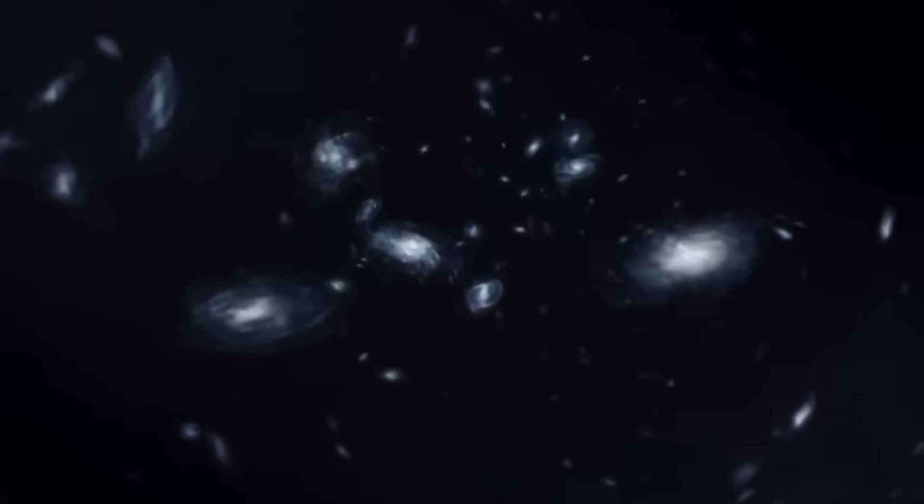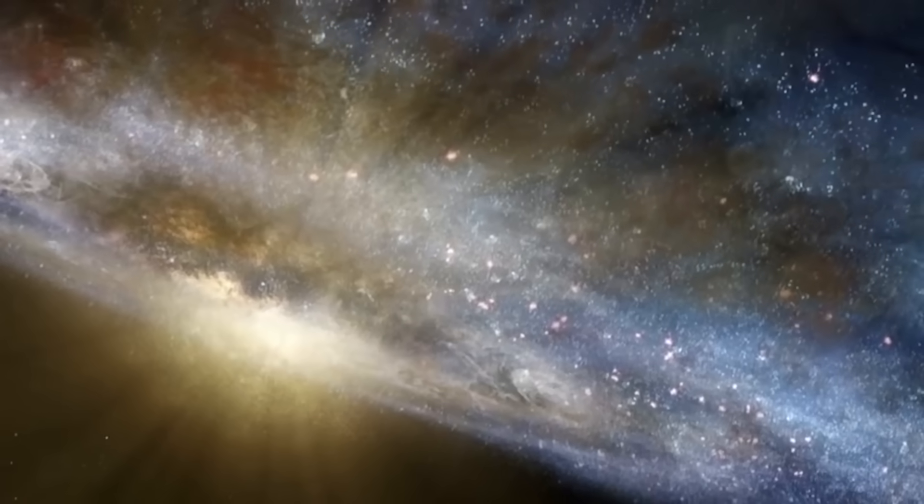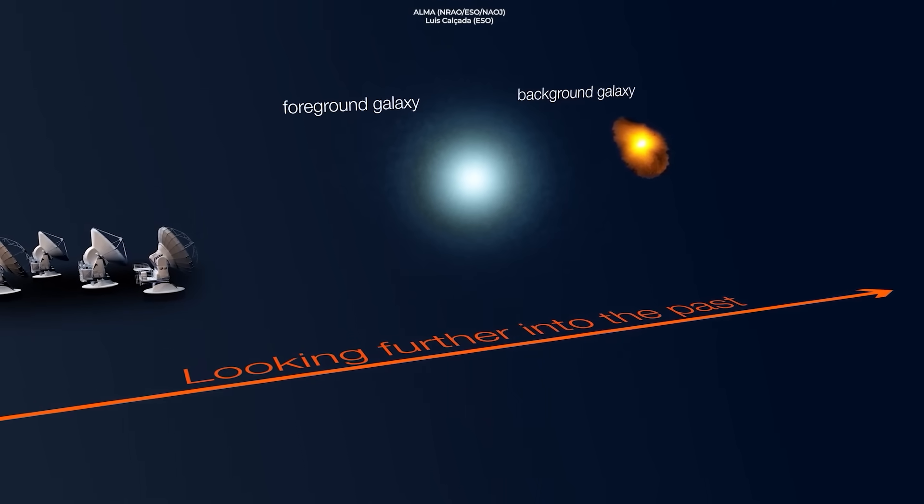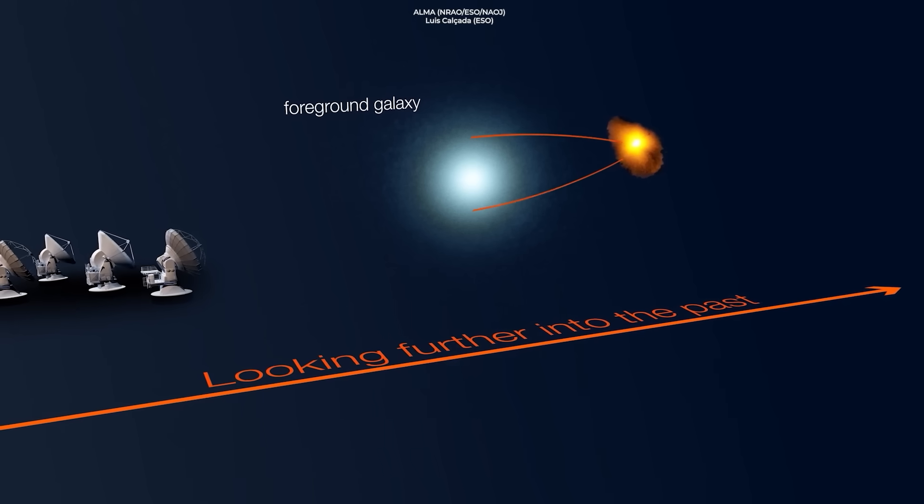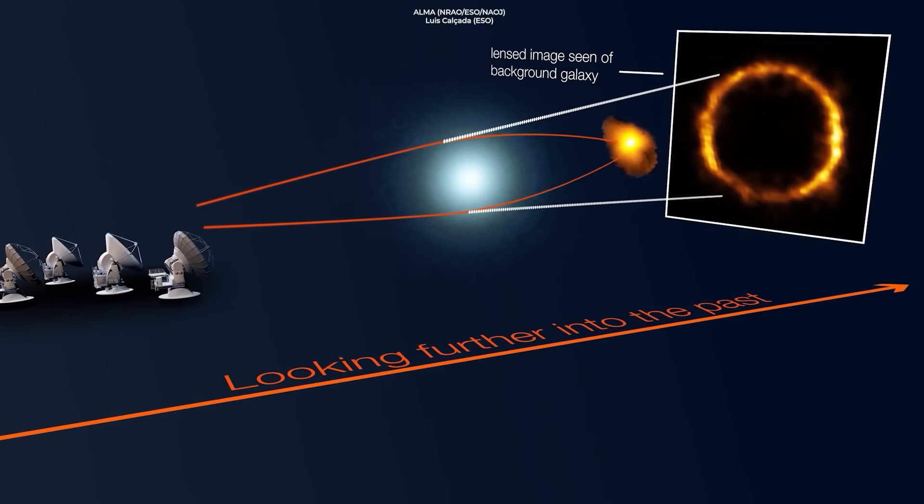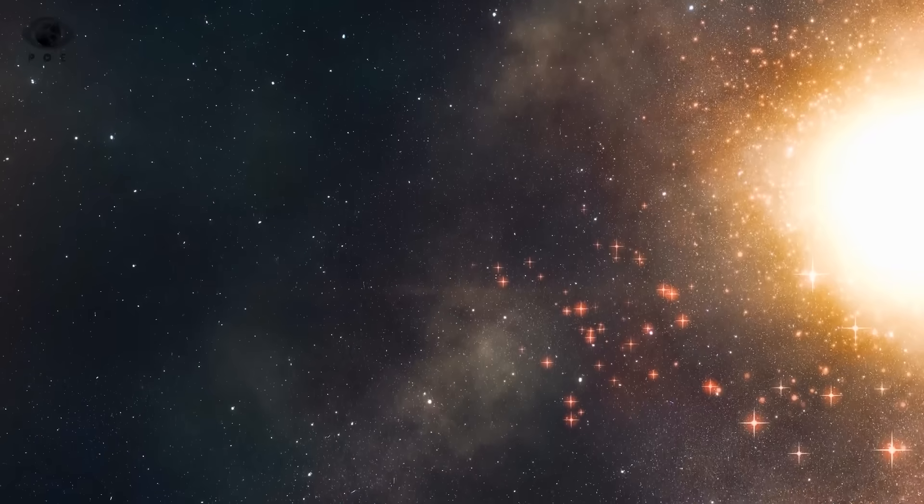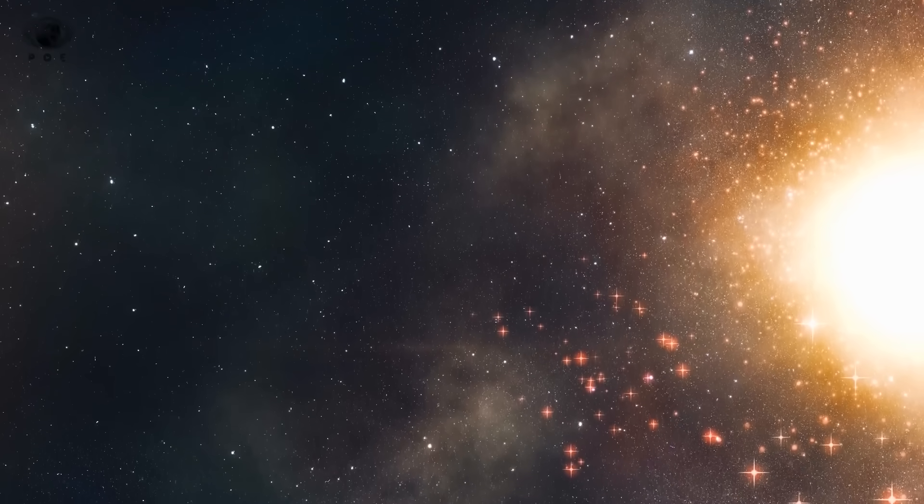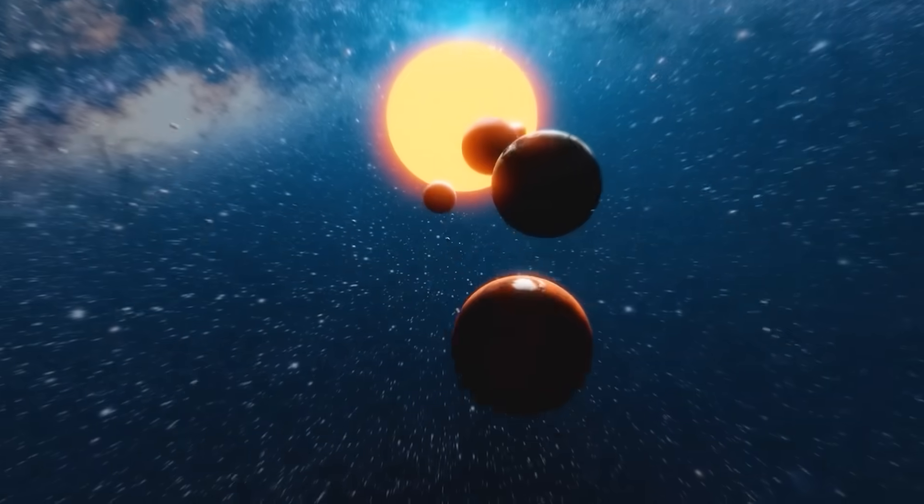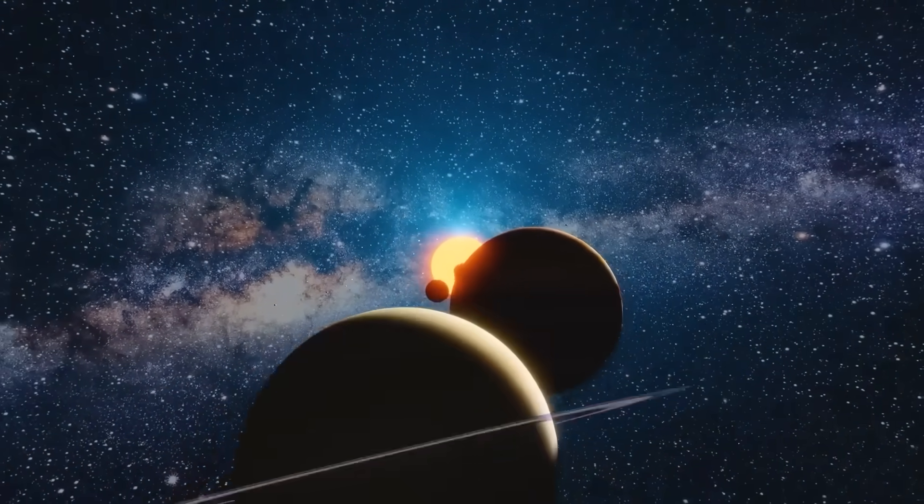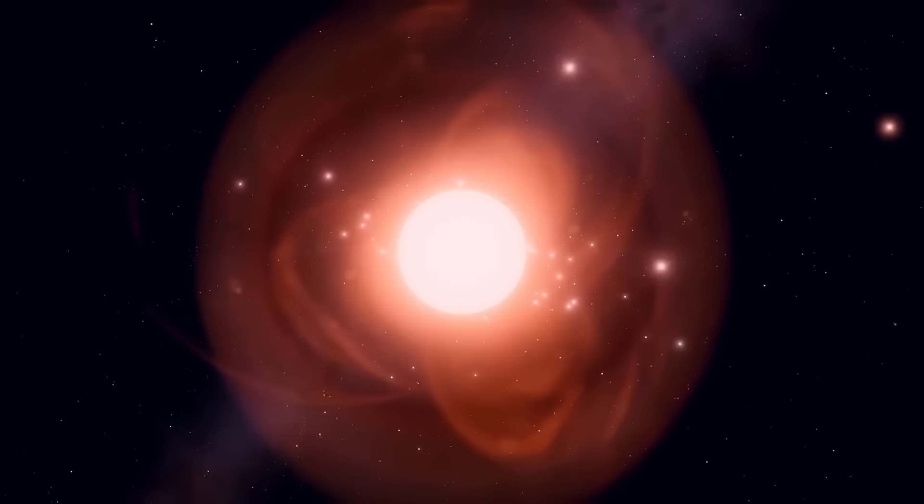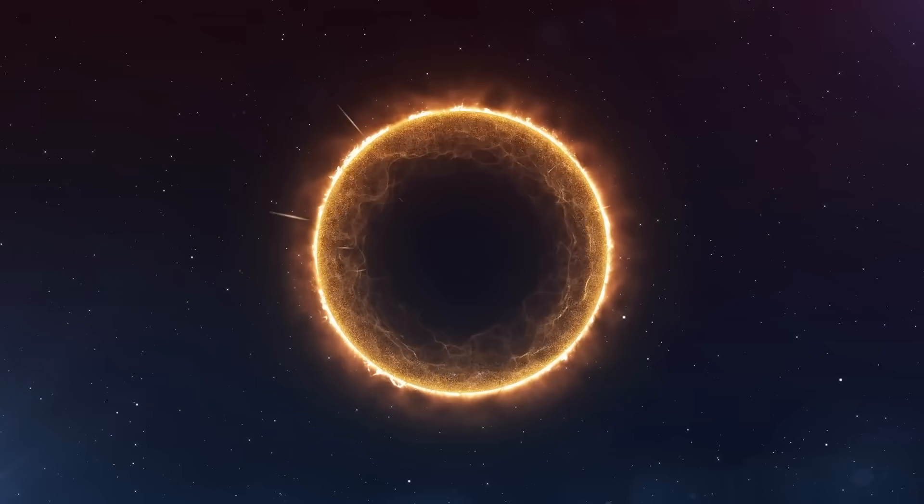For such an image to exist, the alignment between the two galaxies must be exact, down to fractions of a degree, across billions of light years. That's not just rare. That's statistically improbable on a cosmic scale. And while gravitational lensing is a known phenomenon, the degree of perfection here is raising far more questions than answers. Could this be a hint of some deeper symmetry embedded in space-time itself? A sign that the universe isn't as chaotic as we've assumed, but instead governed by a geometry we've barely begun to perceive?